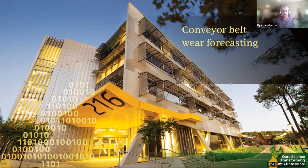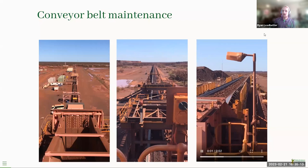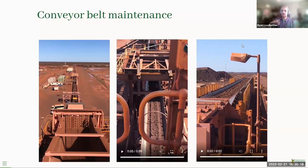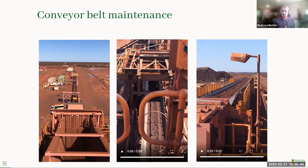These are some iron ore overland conveyor belts on a mine in the Pilbara. Once the ore has been crushed — which is what you can see in the bottom left, that big pit — they're the main method of transporting ore around the mine site. These are long, expensive conveyor belts, so there's not a lot of redundancy in the system. If one fails during a planned period of operation, all production stops in that part of the mine.